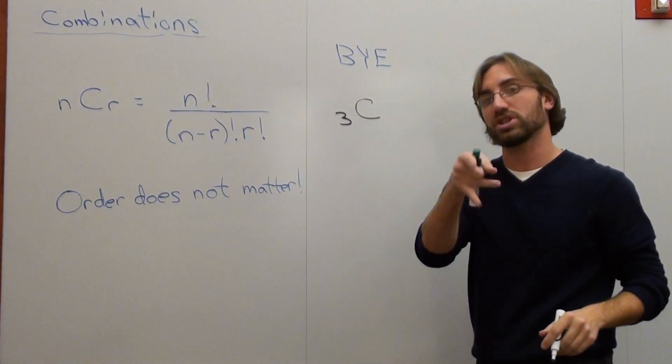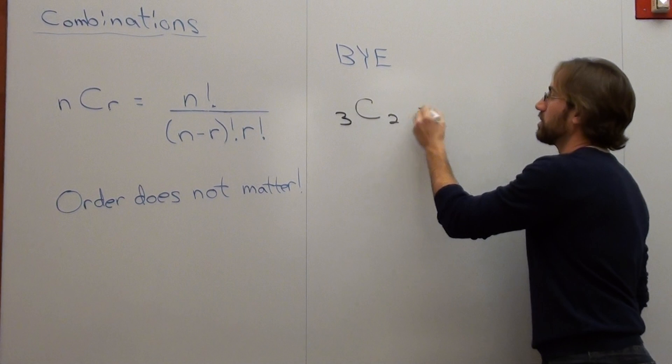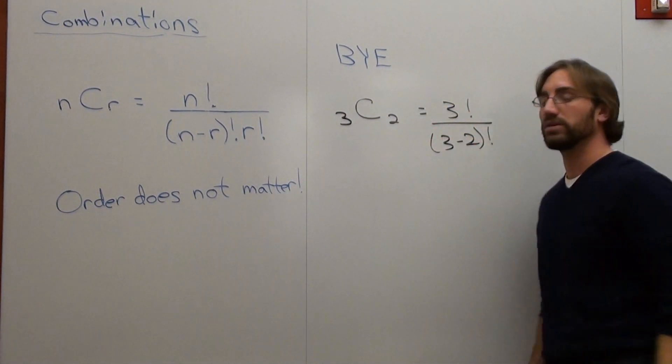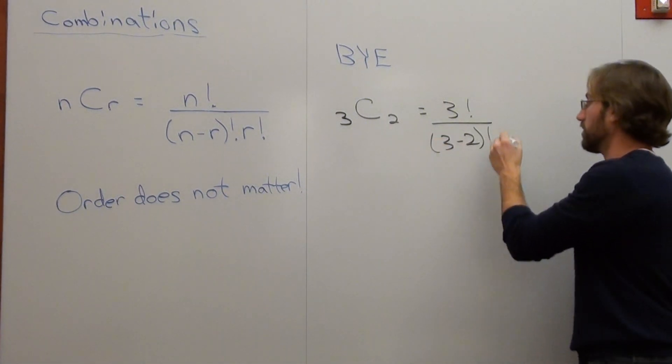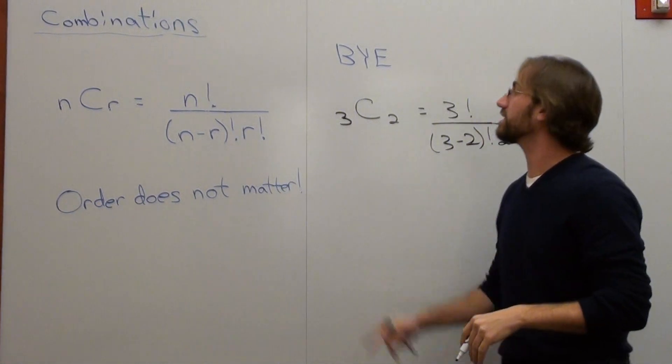And we're not asking for permutation. We're asking for combination. And we want to know how many two. So that's 3 factorial over 3 subtract 2 factorial times 2 factorial. Before we figure out what this rigorous answer is, let's do this.